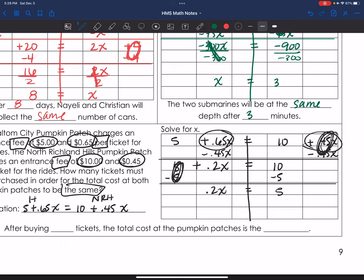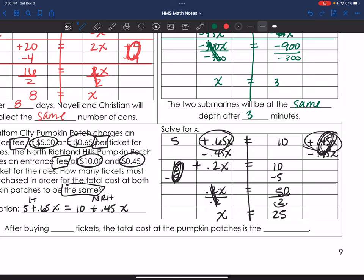My last step is divide. I'm going to divide by .2 on both sides. .2 divided by .2 is 1. That's kind of the whole point. So I get that lovely 1x equals. I am going to bring this over and then put a zero there so I can divide it in my head. And I know that 2 can go into 50 25 times. Therefore, .2 can go into 5 25 times. What this means is, after buying 25 tickets, the total cost of the pumpkin patches is the same.